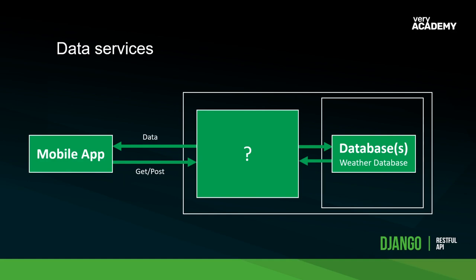The weather app has a connection to the internet, connecting to a database holding weather data, and updates dynamically. This is a paradigm we can now implement on the web using technologies such as React. React is a JavaScript framework where we can build almost whole applications and have them downloaded to the browser. Think of it like mobile apps — we download the React app from a server to your browser, and the one thing potentially missing is the data.